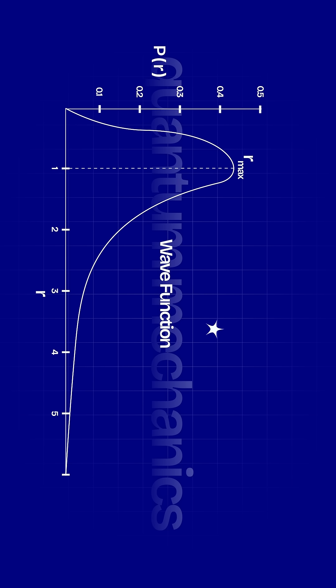Before measurement, the system exists in a superposition, a ghost-like blend of all outcomes. It's not in one state or another, it's in all of them simultaneously. But when we measure it, we're told the wave function collapses into one definite result.